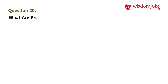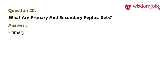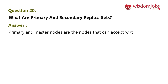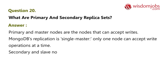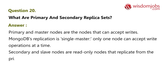Question 20: What are primary and secondary replica sets? Answer: Primary and master nodes are the nodes that can accept writes. MongoDB's replication is single-master, meaning only one node can accept write operations at a time. Secondary and slave nodes are read-only nodes that replicate from the primary.